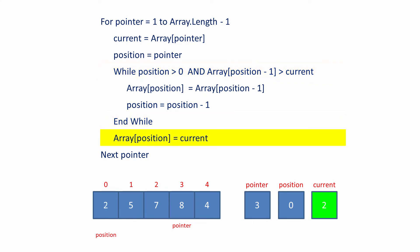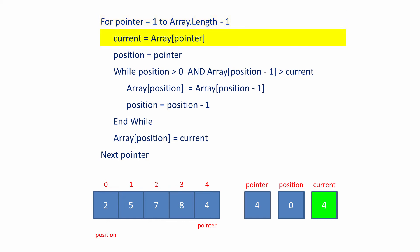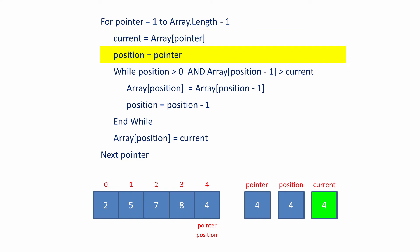The current value is copied into its new position in the sorted section of the array, and pointer is incremented. The outer loop begins again. This is the last time the outer loop will run because the value of pointer is the same as the length of the array minus 1. The last unsorted item of the array is assigned to current. The value of pointer is assigned to position, and the inner loop begins executing once again.